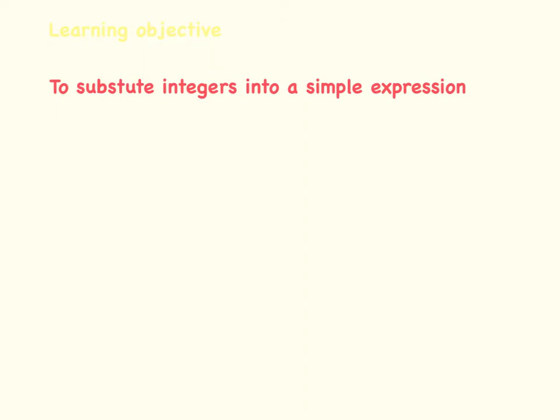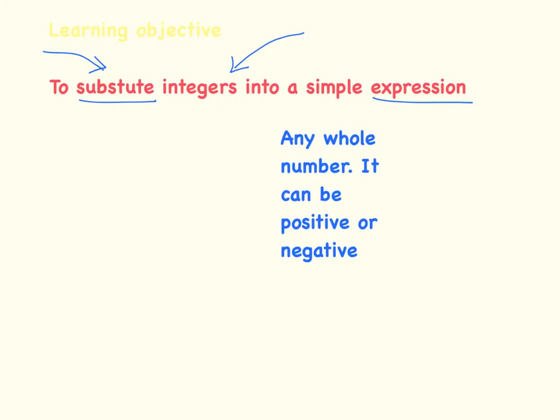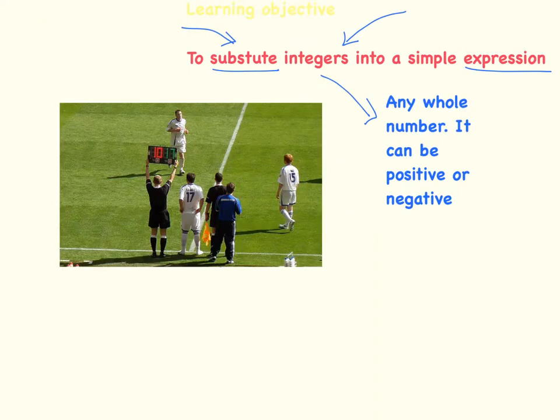Okay, so today's learning objective is to substitute integers into a simple algebraic expression. So our key words are definitely integer and substitute. An integer is any whole number that is positive or negative, and the word substitute—if you think to a football game and we bring in a substitute, we are replacing someone, isn't that correct? So the word substitute means to replace.